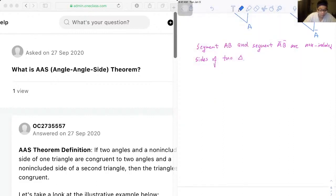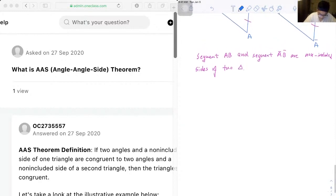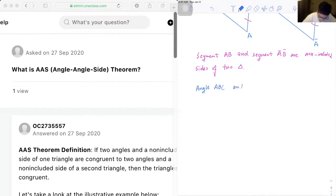So we have the following conditions. Angle ABC and angle A bar B bar C bar are congruent. And angle ACB and angle A bar C bar B bar are congruent.